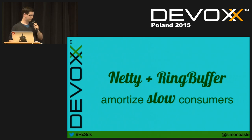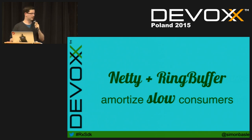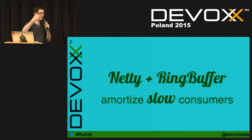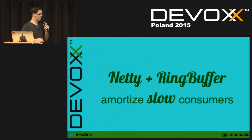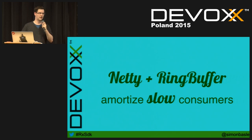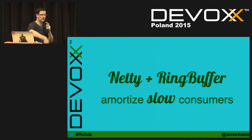Netty plus the ring buffer amortizes slow consumers — we get something called the batching effect. If your server cannot keep up with load, queuing requests in the ring buffer and having Netty consume them at its own pace means less problems with a slow server. The batching effect naturally batches queries into a single TCP stream if they come together at a quick pace, rather than creating one stream per query.